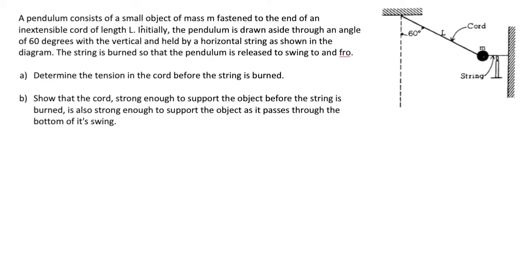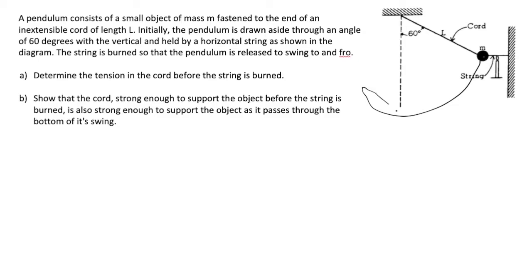A pendulum consists of a small object of mass M fastened to the end of an inextensible cord of length L. Initially, the pendulum is drawn aside through an angle of 60 degrees with the vertical and held by a horizontal string, as shown in the diagram. The string is burned so that the pendulum is released to swing to and fro.